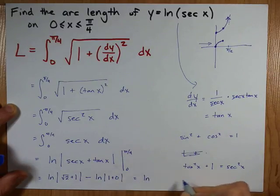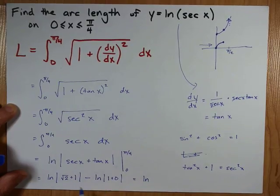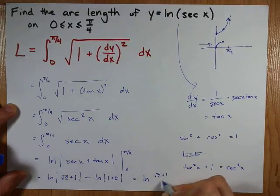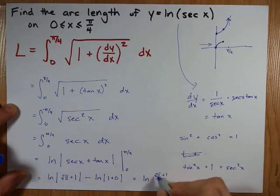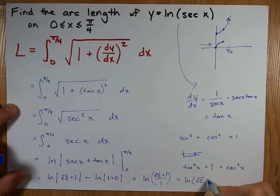I end up with the ln of... Now, if you're a big fan of log rules, you'll know that the difference between two ln is the same as the ln of the quotient. So, I end up with root 2 plus 1 over 1. Oh, and I just end up with the ln of root 2 plus 1. Nice!